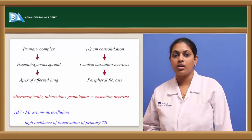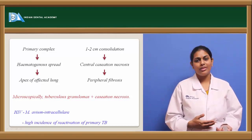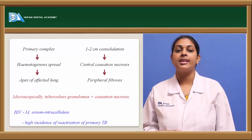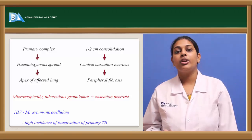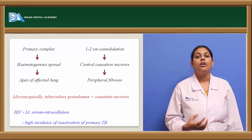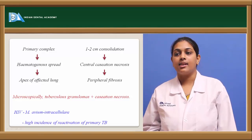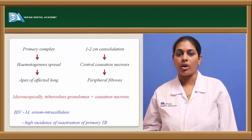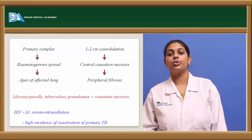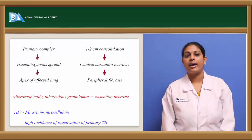The secondary lesion appears as a concentration measuring 1 to 2 centimeters in diameter. As the lesion progresses, it shows central caseation necrosis followed by peripheral fibrosis. When it is because of the primary complex, spread can be through hematogenous route — through the blood — starting from the primary lesion and affecting the apex of the lungs. Microscopically, the secondary lesion appears as a tuberculosis granuloma with central caseation necrosis.